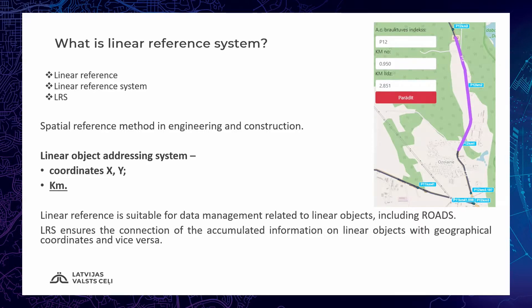Linear referencing system is a linear object addressing system. It ensures linking between geographical coordinates X and Y, and road addresses in kilometers and meters.